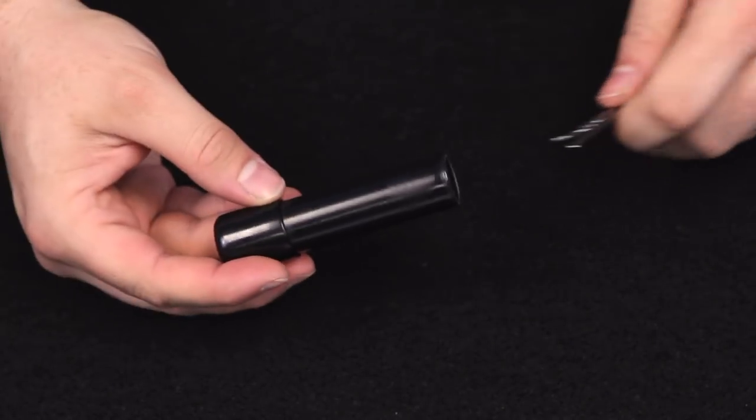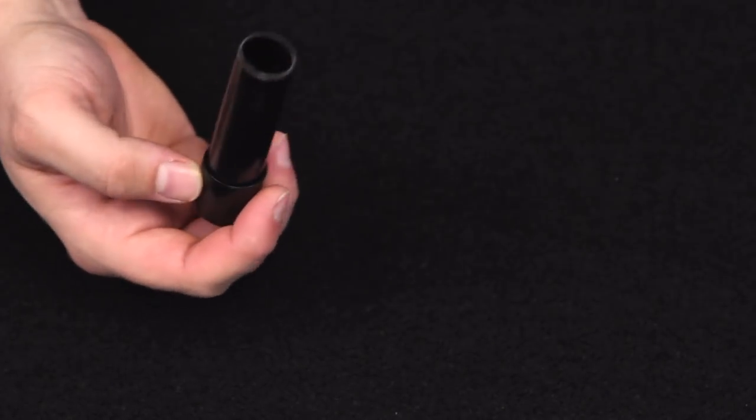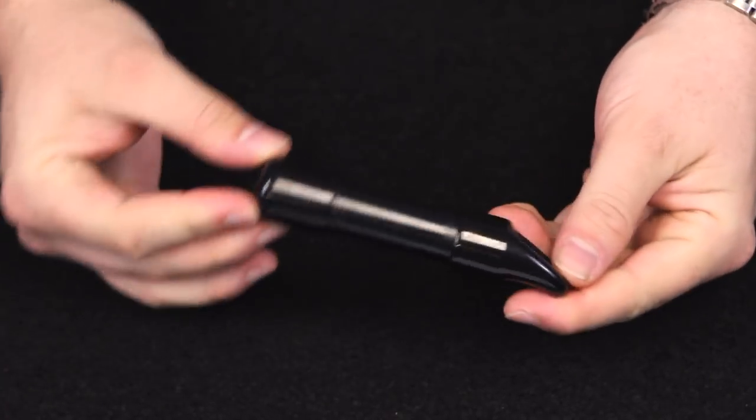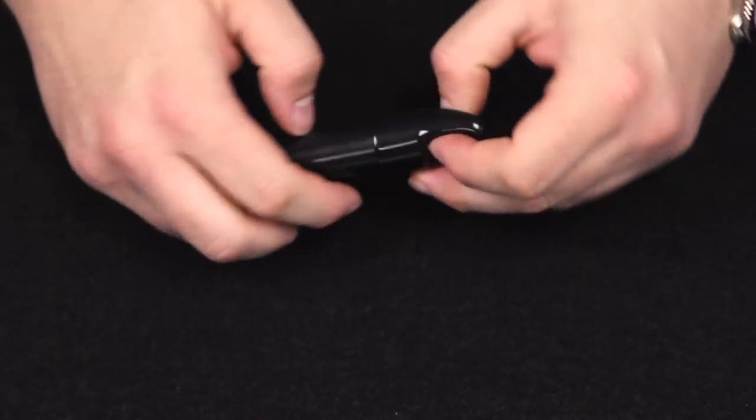Or alternatively, you can use the GoTube concealment device to pop that set in there, close that up with that rubber cap to have a portable way to carry this tiny set.